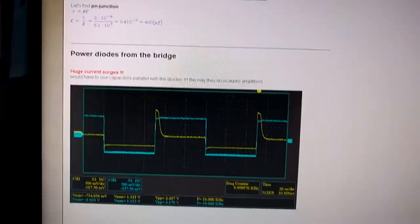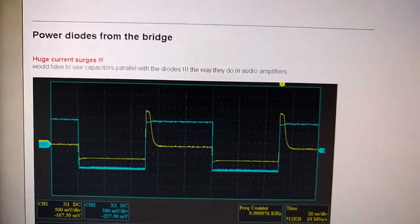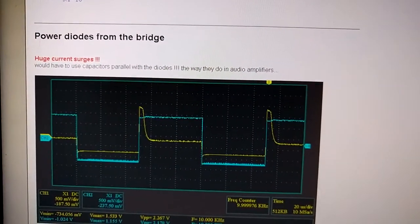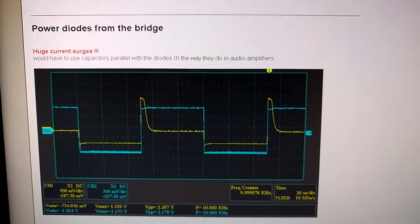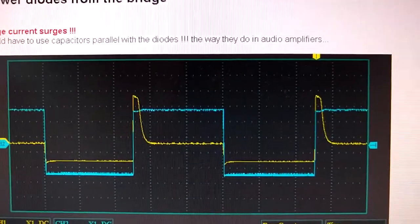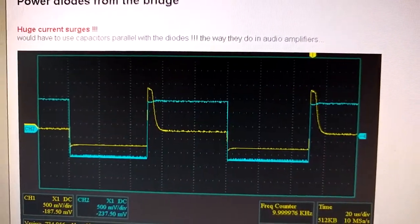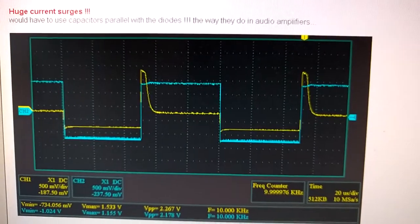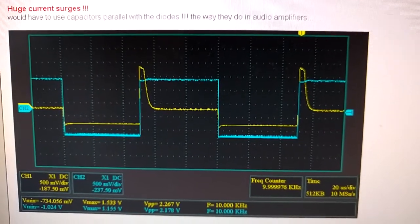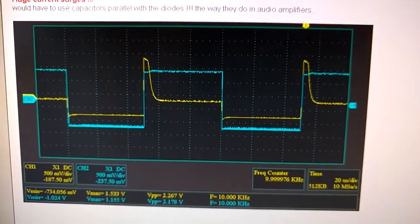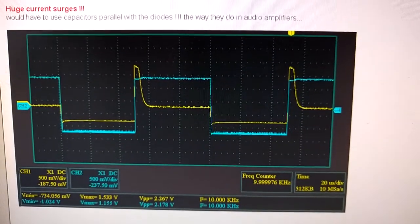Those are the results. And here is for the reference a power diode. I just took the power bridge and measured one diode. So we have very nice surges of current. So that's why if you build a power supply, the good idea would be to put a capacitance in series with the diode so that you can negate those pulses.